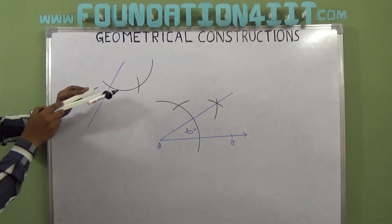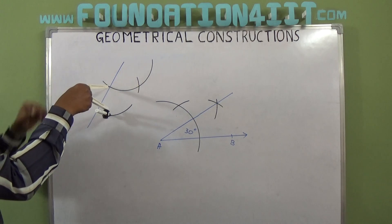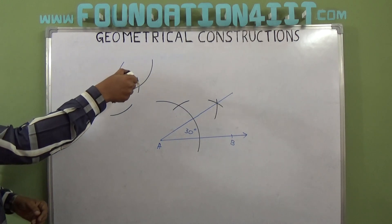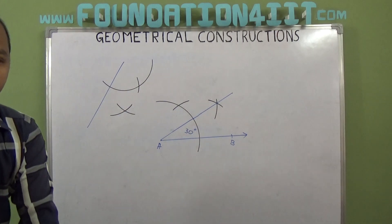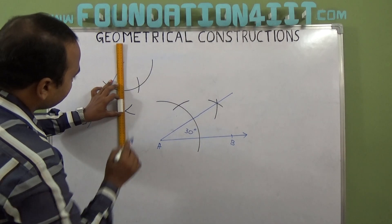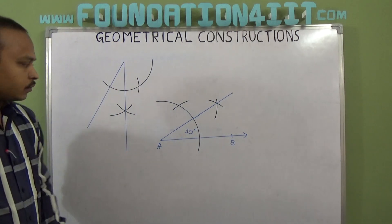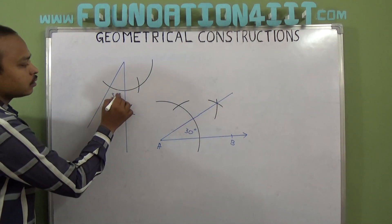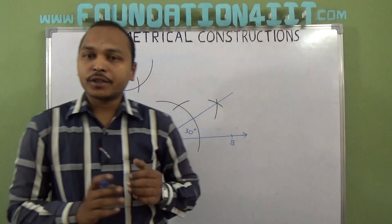So take here, draw an arc, and from here draw an arc down. Then you can join with this line. That's it, now this is 30 degrees. So not only vertical, even horizontal or any line we can do the same method.